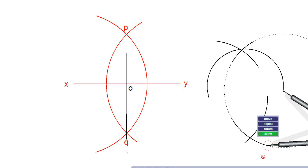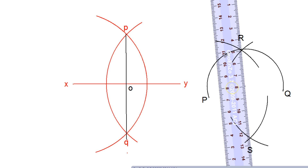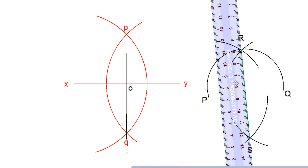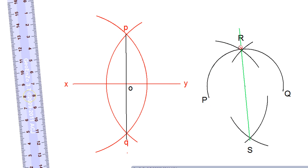Before connecting, I will name the points. The original arc was PQ. I drew arcs taking a radius more than half of the arc length from both P and Q, and they intersect at points R and S. Now I connect R and S using the scale, extending the line. This line RS is the bisector of arc PQ.